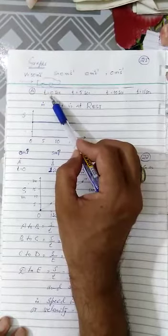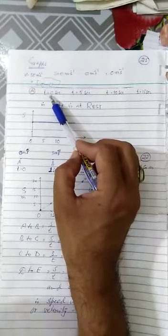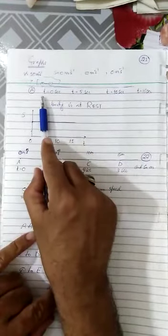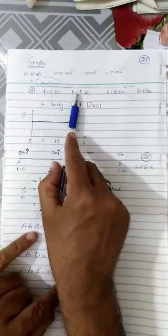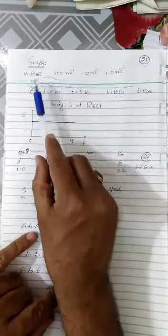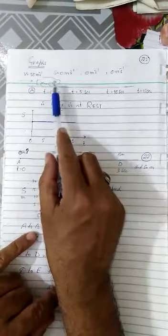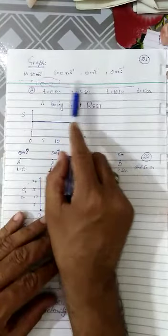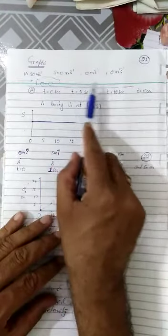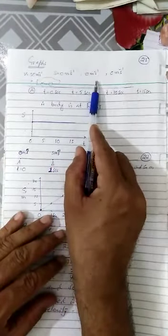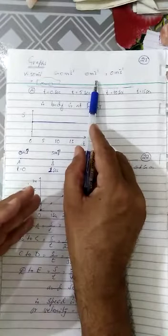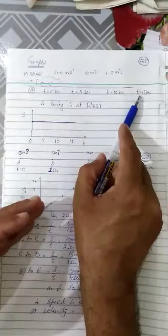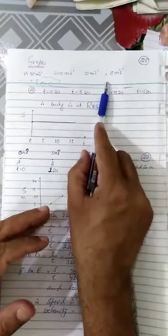When this car reaches at point A, our stopwatch was showing time zero. Now we have started the stopwatch. Right after five seconds we see that the car has no distance covered. Next after five seconds, means total 10 seconds, we again see there is no distance covered by the car.